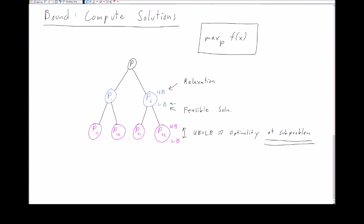The other part of the branch and bound algorithm is the bounding step. In the bounding step we effectively compute a solution in each one of our subproblems. However, because the problem is hard, we're not going to compute an exact solution — instead we compute an upper and a lower bound. For our maximization problem, computing an upper bound is effectively computing a relaxation, and computing a lower bound means finding some feasible solution through a heuristic or otherwise. We can compute upper and lower bounds any way we'd like.